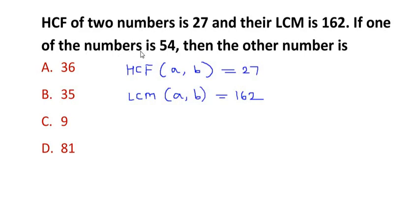And if one of the numbers is 54, that is let us take a is given as 54, then the other number is - so they want us to find out what is the value of b.